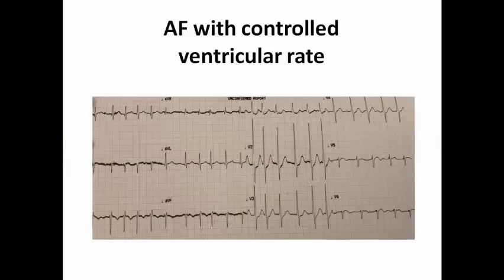Also, the ECG may show AF with controlled ventricular rate, especially in elderly. The patient may be denying symptoms and only feels palpitation when the heart rate is tachycardic. When I see this abnormality in the ECG, I would start controlling medication and assess the CHA₂DS₂-VASc score for oral anticoagulation.